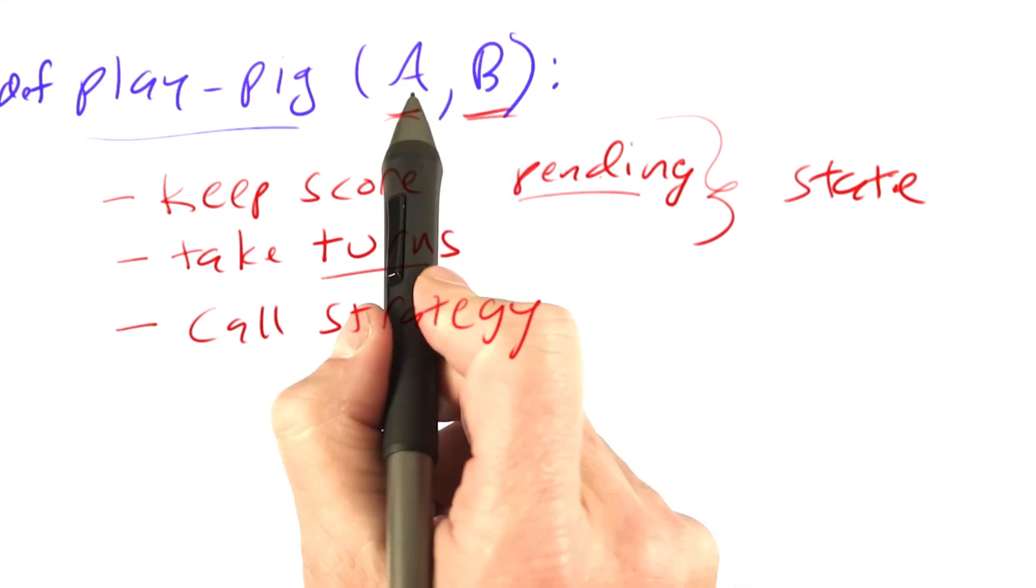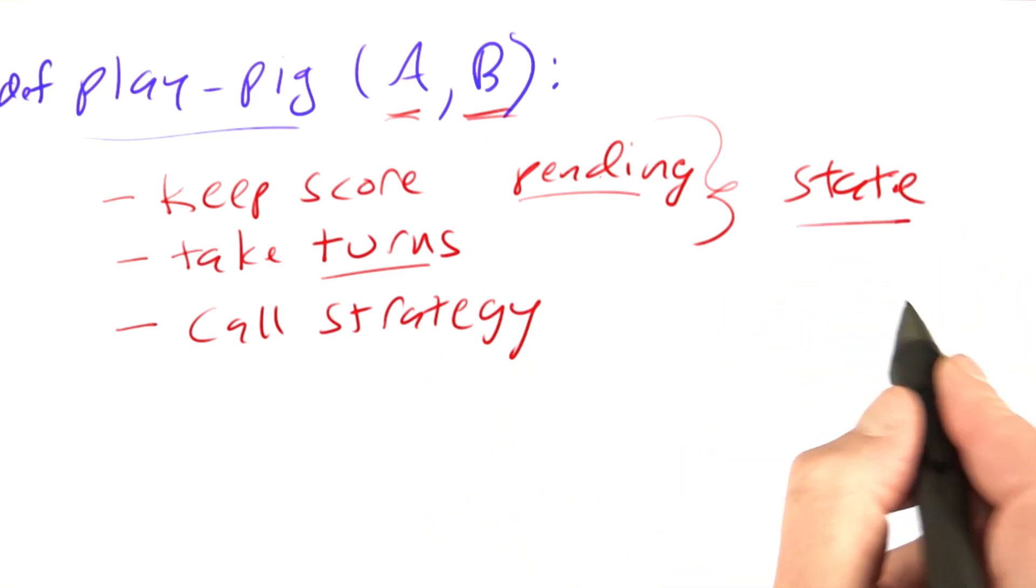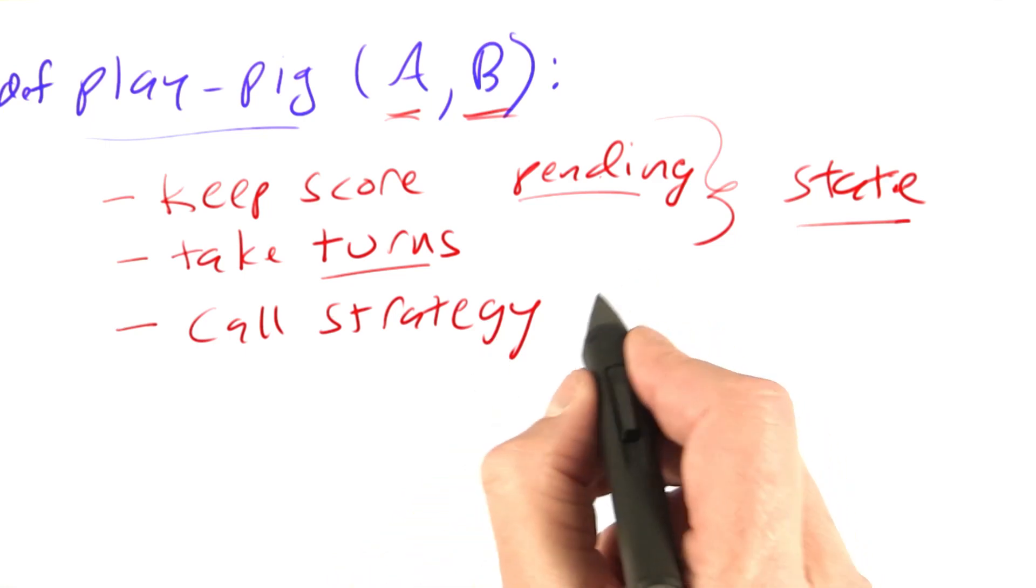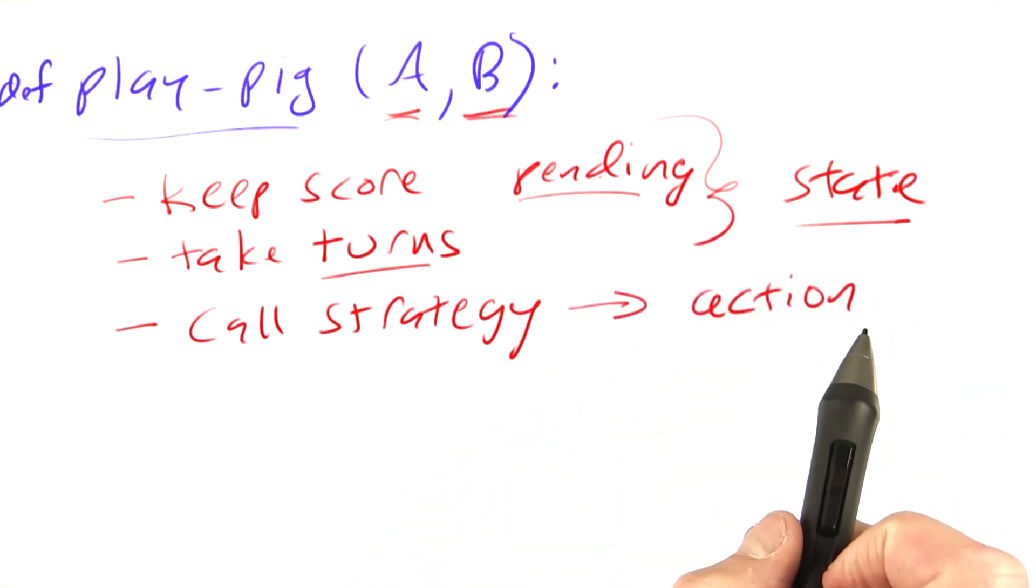It has to call the strategy functions. So A and B are going to be strategy functions that we pass in. It has to keep track of the current state, pass that state to the strategy function for the appropriate player whose turn it is, and then that will give back an action, either roll or hold.